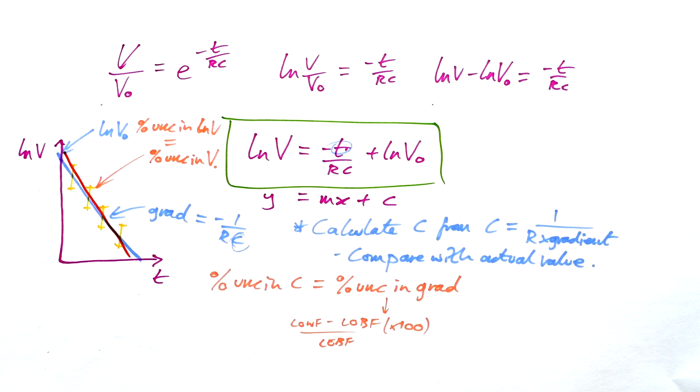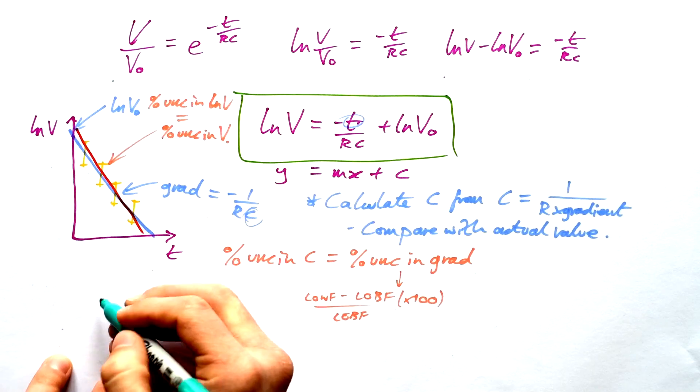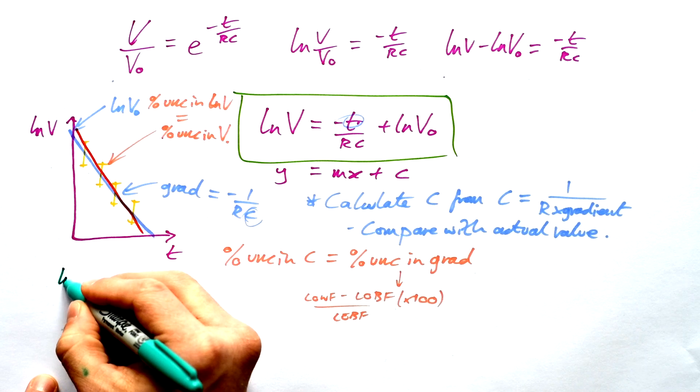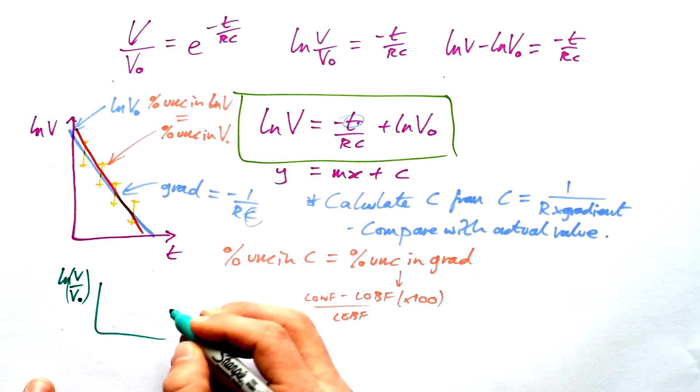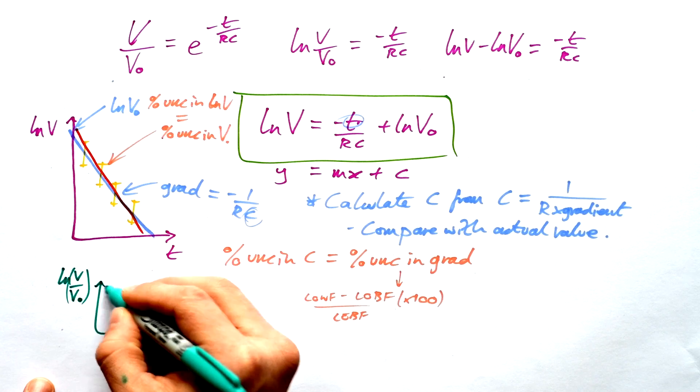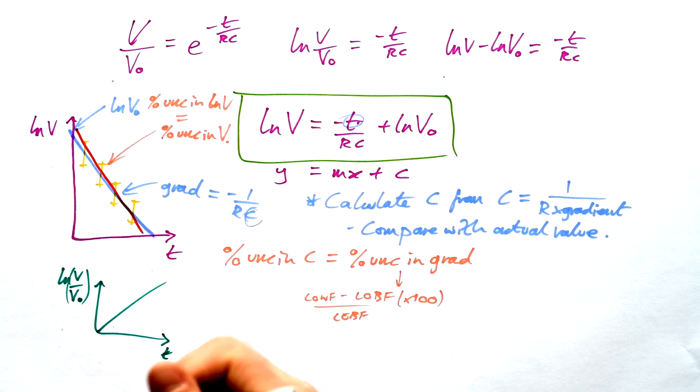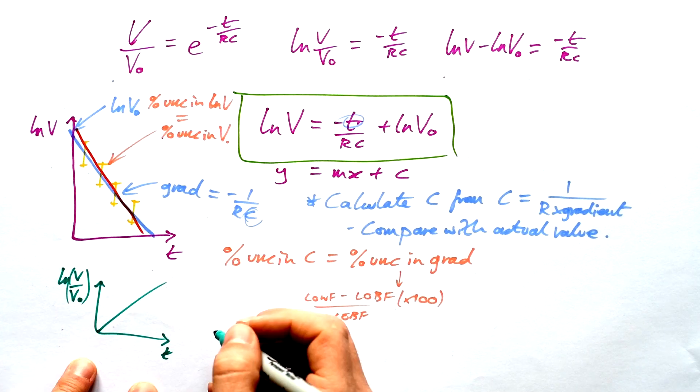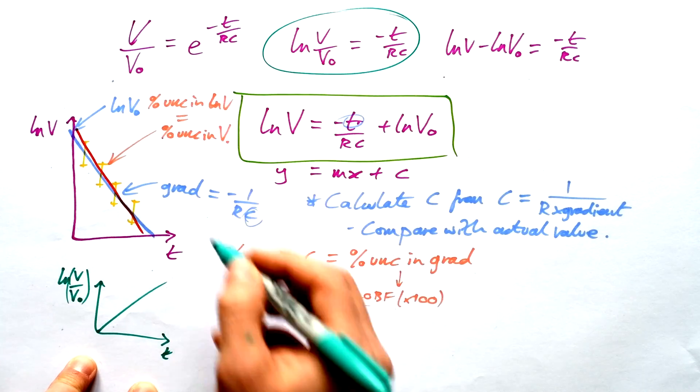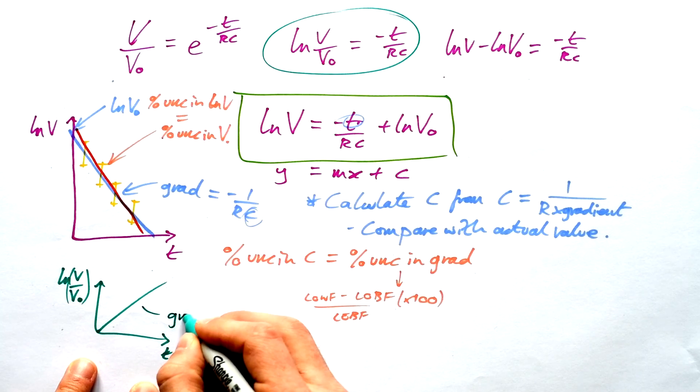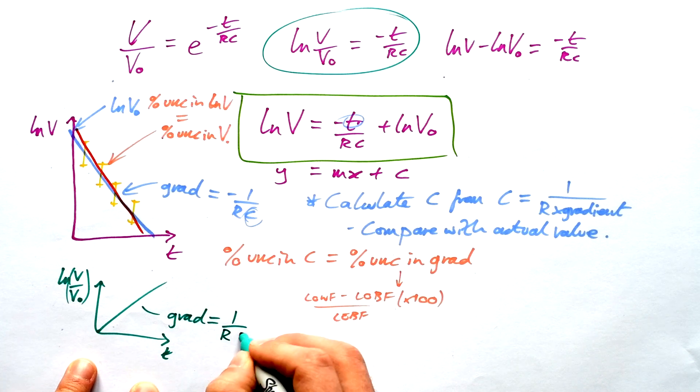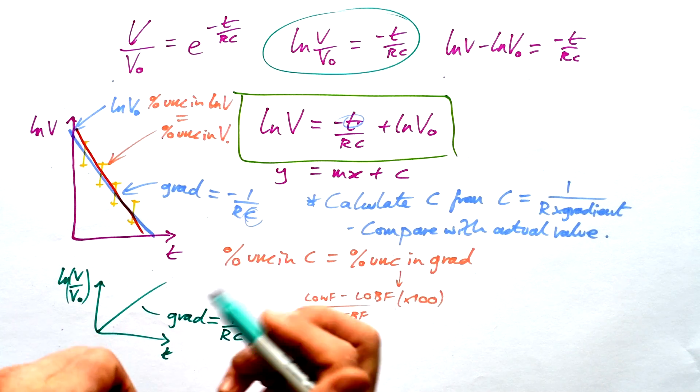So there you go. That's how you can find the capacitance of a capacitor by discharging it through a resistor and obtaining a graph using logs. Very briefly, there is another thing you can do. You can actually do a graph of log V over V0 and time. And you're going to end up with a straight line graph that actually goes through the origin. Okay, it might be a negative gradient, but we can just forget about the minus. And so as you can see from this halfway equation up here, we can see that the gradient is going to be equal to 1 over RC. And so that's another way that you can do it.